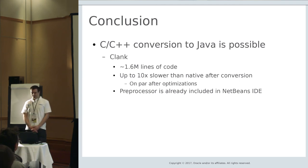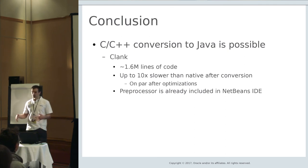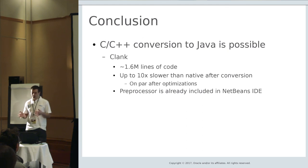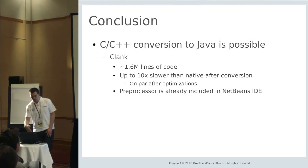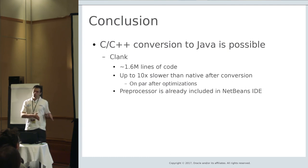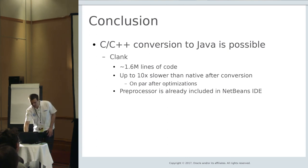In conclusion, C++ to Java conversion is possible — we've done it for Clang. Our project now has 1.6 million lines of code, and in fact it's already at 2 million with the converter accelerating the process. It can sometimes be 10x slower than native code initially, but after JIT optimizations you usually get the same or even better performance due to runtime profiling. To prove this works, the preprocessor is already included in NetBeans IDE and the switch between our own preprocessor and the Clang preprocessor was seamless for users. Thank you.